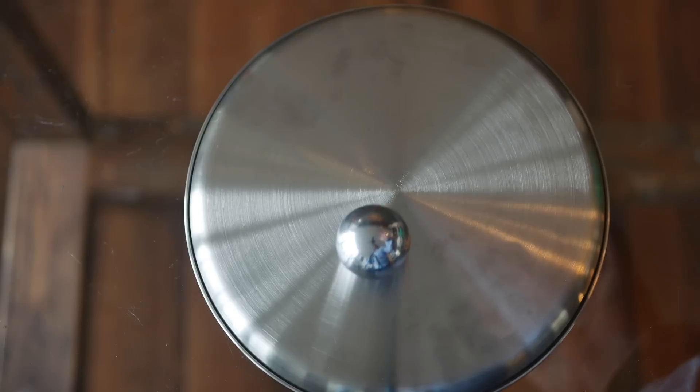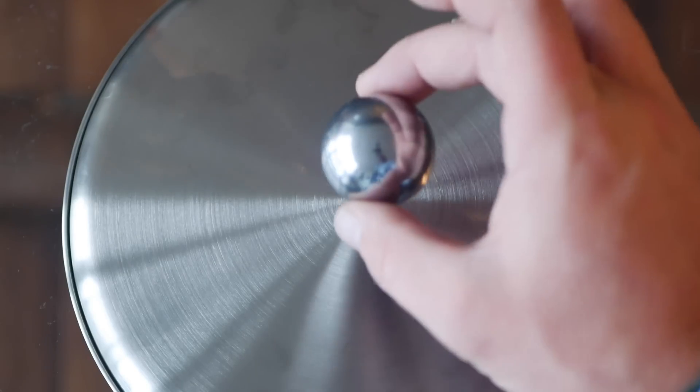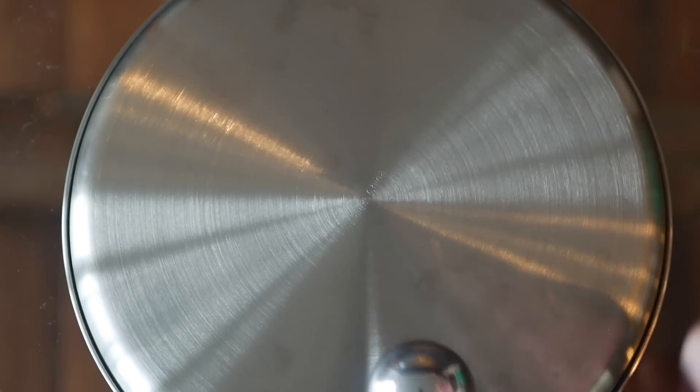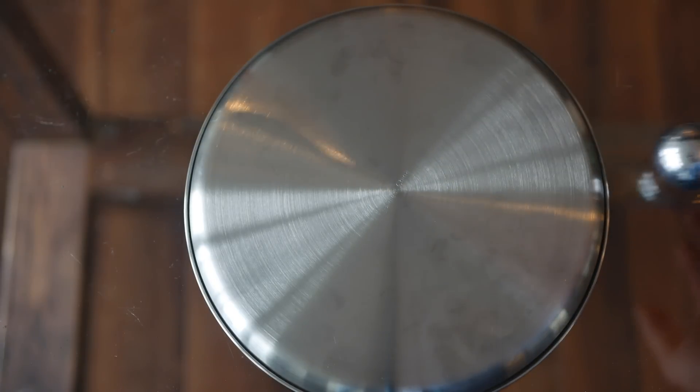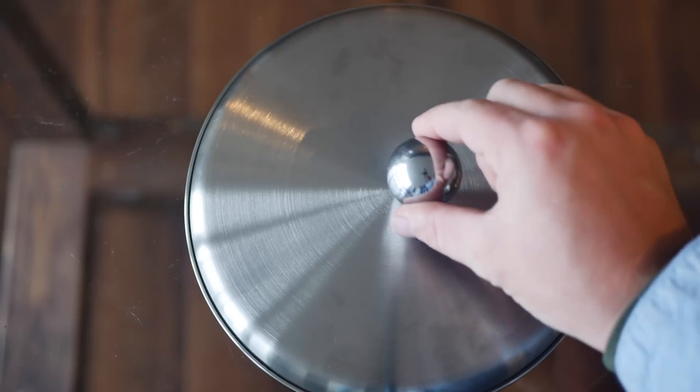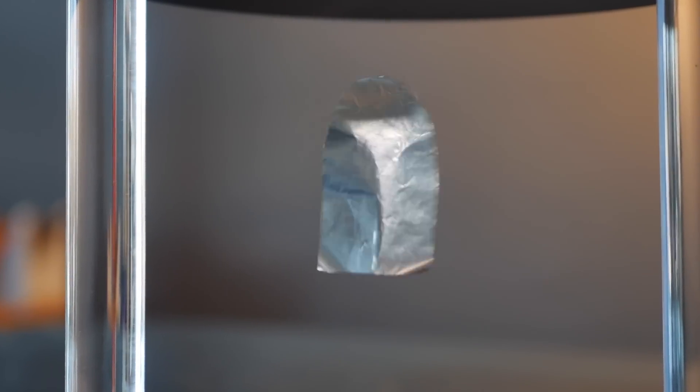Earnshaw's theorem states that a charged object, like this ball, can't be maintained in a stationary equilibrium solely by the interaction of the object's charge with the surrounding static charges. It can be temporarily stable or quasi-stable at best.